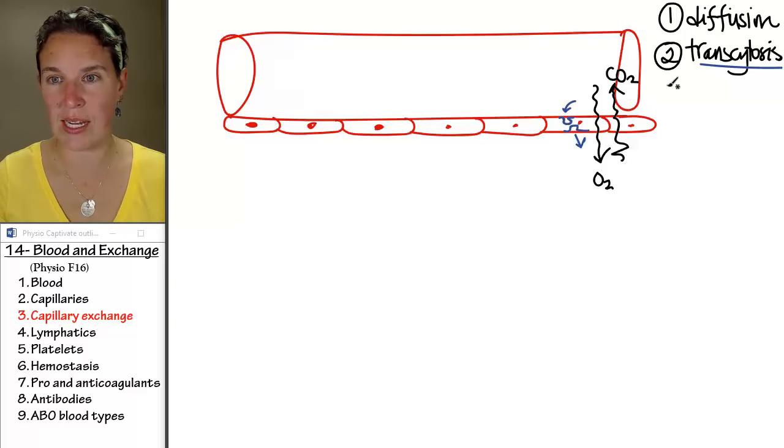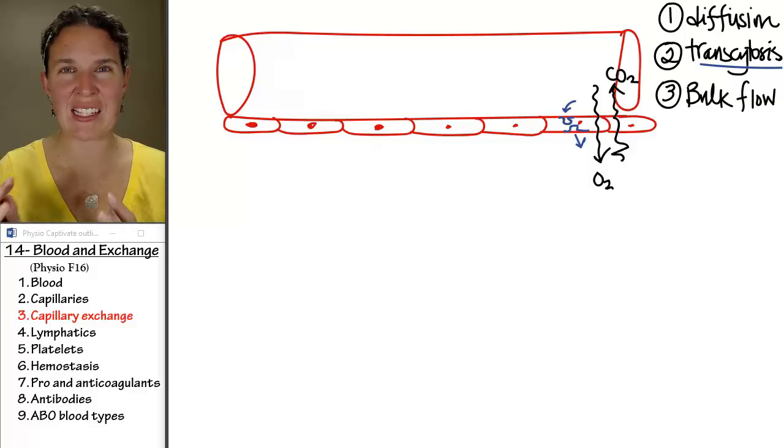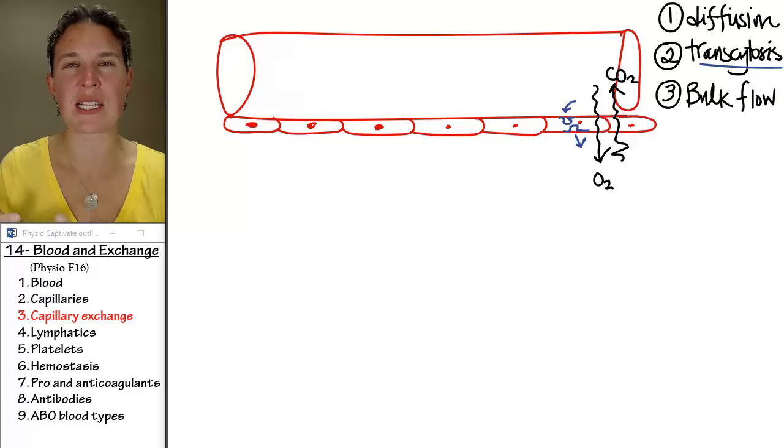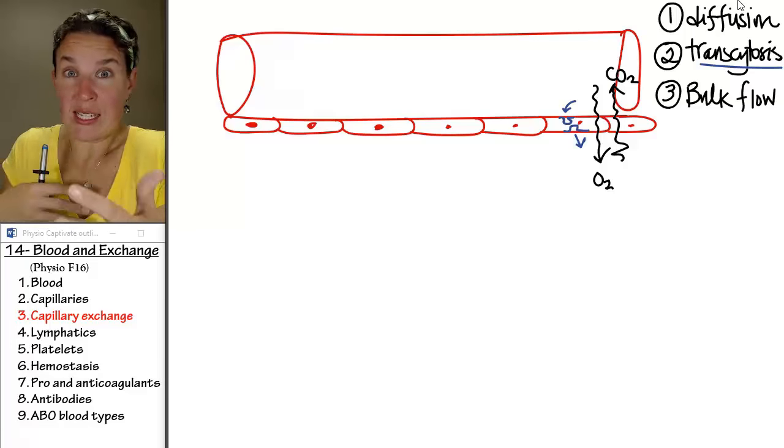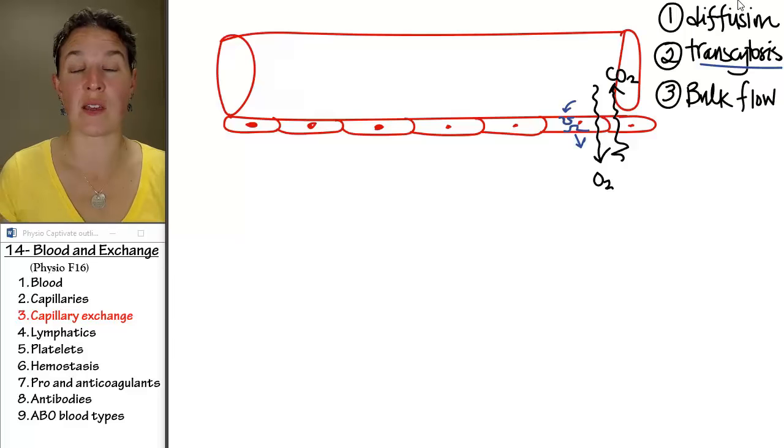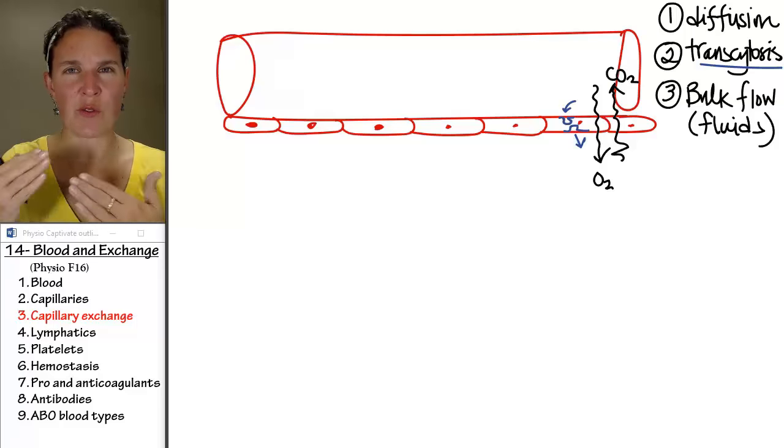The third technique, the third strategy, is called bulk flow. And this one is by far the most complex, but all the mechanics of this, you already know. So, really, it's just about putting together pieces of what you would expect to happen. Bulk flow relies on two pressures. And again, all it is is stuff is going to move in and or out of the blood vessel. And bulk flow, we can assume that we're talking about bulk flow of fluids, and so I think it's helpful if you think of it that way.